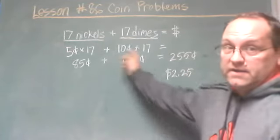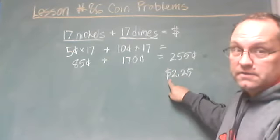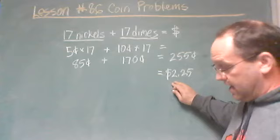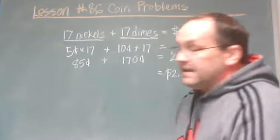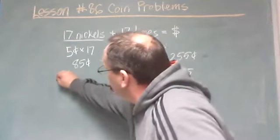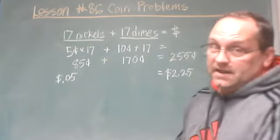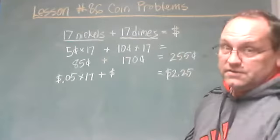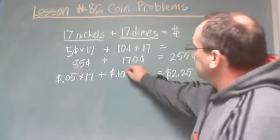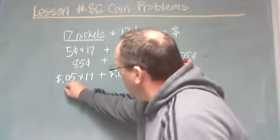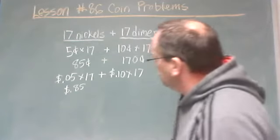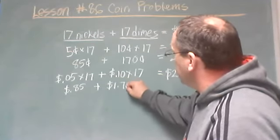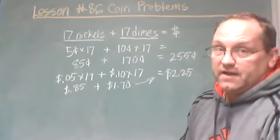So if we want our equation to return dollars, we must express the value of nickels and dimes in dollars. The value of a nickel in dollars is $0.05, multiplied by 17. The same with dimes: $0.10 times 17. That gives us $0.85 plus $1.70, which equals $2.55.